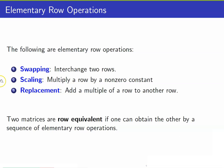The elementary row operations are: number one, swapping — we interchange two rows; number two, scaling — we multiply a row by a non-zero constant; and number three, replacement — we replace a row by adding a multiple of one row to another row. When we perform these row operations on a matrix, the matrices we obtain are said to be row equivalent.